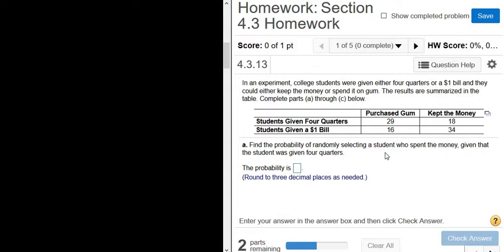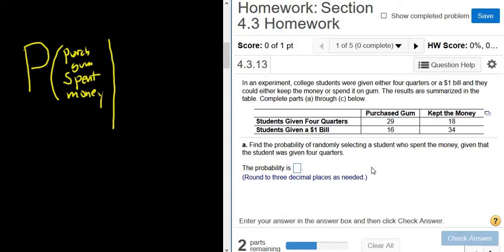The question says find the probability of randomly selecting a student who spent the money given that the student was given four quarters. Okay, so the key word here is given. This is conditional probability, right? Given is conditional. So you write the P, parentheses, and then just go in order. Student who spent the money, so spent money. That's the same thing as purchased gum, right? Purchased, I'll just put purch gum. Then it says given that, so you write the line. Given that was given four quarters, so four quarters.